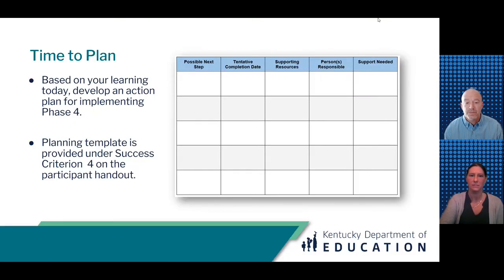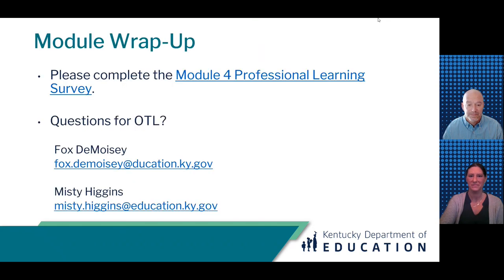With your district teams, use the participant handout to begin thinking about possible next steps, completion dates, supporting resources, responsibilities, and support you'll need for implementing Phase 4 back in your district. The planning template is at the end of the participant handout. Finally, we ask that you take time to complete the short professional learning survey to provide feedback on Module 4. An ELO certificate is available and can be accessed at the end of the survey. Thank you for participating in Module 4 of the Curriculum Development Process Professional Learning Series.